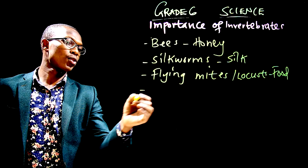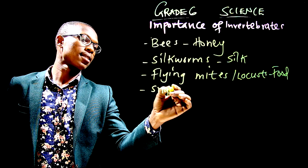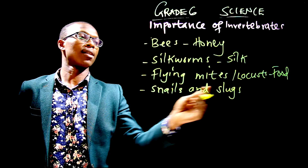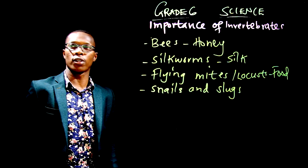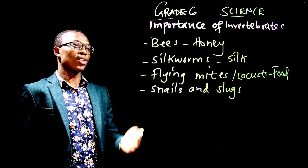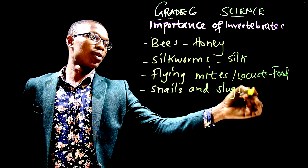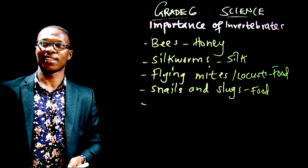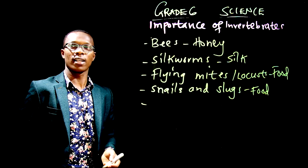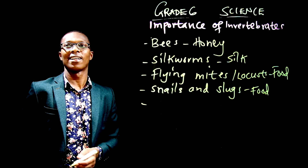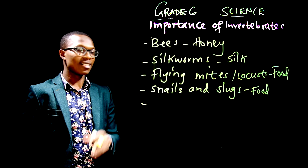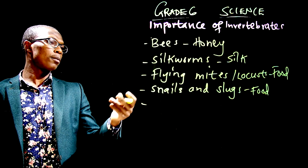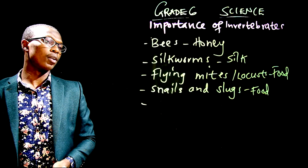We also have snails and also slugs. Remember, snails and slugs are also examples of invertebrates. So these are normally eaten in some communities as well. Something really interesting — if you go to China, you'll find people eating a lot of things. This is all going to be strange to you. They are normally eaten by some communities.